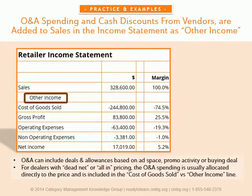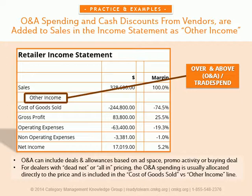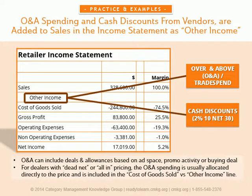Something else that can influence sales is other income captured by the retailer. This can include over and above spending by vendors. Some vendors will offer deals and allowances based on ad space, promotional activity, or buying deals. This may be captured as other income and added into sales in the income statement. For retailers who have dead net pricing, the over and above spending may be allocated directly to price and would be included in the cost of goods sold calculations versus in other income.